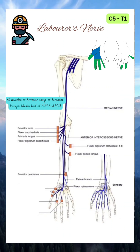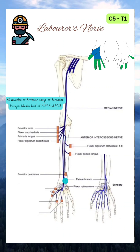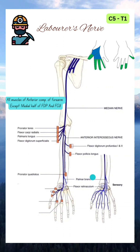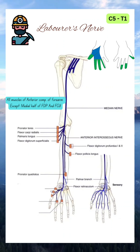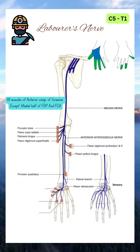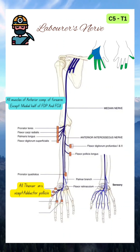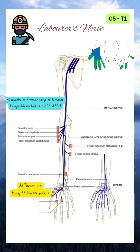At the distal part of the forearm, it gives rise to the palmar cutaneous branch of the hand. It then enters into the carpal tunnel. Inside, it supplies the thenar muscles, except for adductor pollicis, which is supplied by the ulnar nerve, and it supplies the first and second lumbricals.